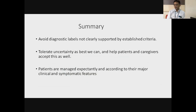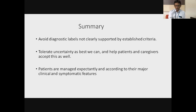Coming to the summary: there are many situations where you cannot give a diagnostic label unless there is an established criteria. One of the problems with physicians is that we find it difficult to tolerate uncertainty, and many UCTDs are basically uncertainty — you just can't say whether it's rheumatoid or lupus. If we can overcome that problem, treat the patient as they are, and help the patient understand, that's an important step towards management of UCTD. Patients need to be managed expectantly and according to the major clinical and symptomatic feature. That is the last slide. Thank you very much.